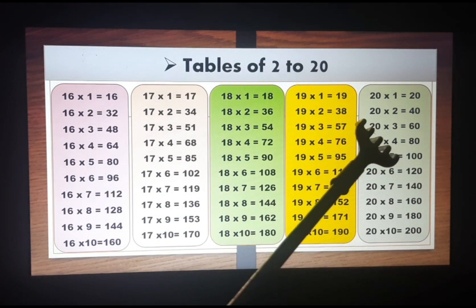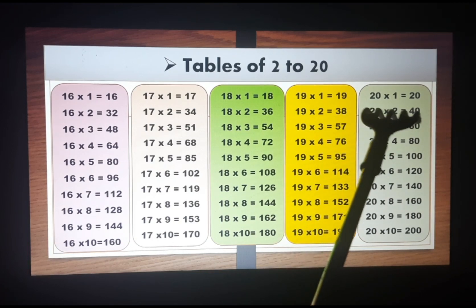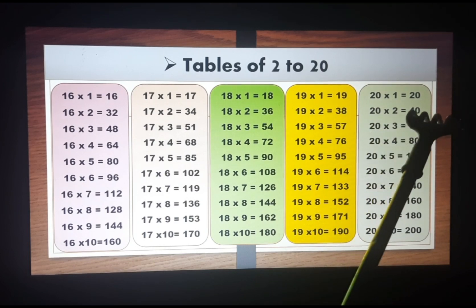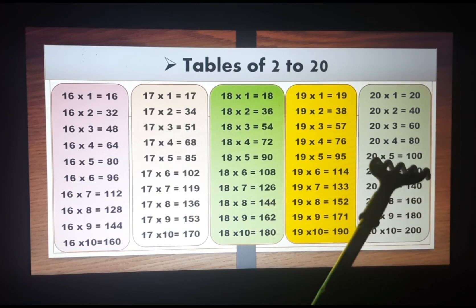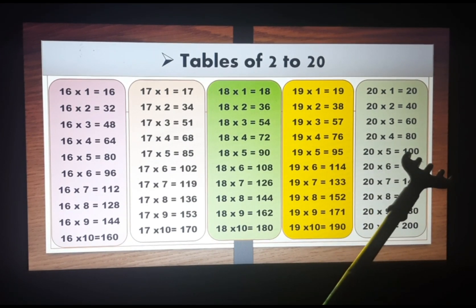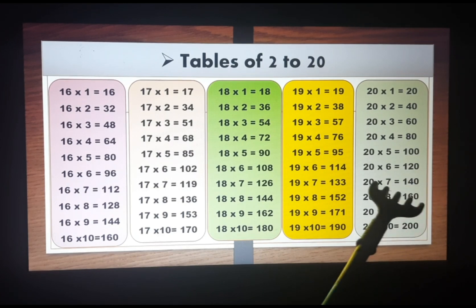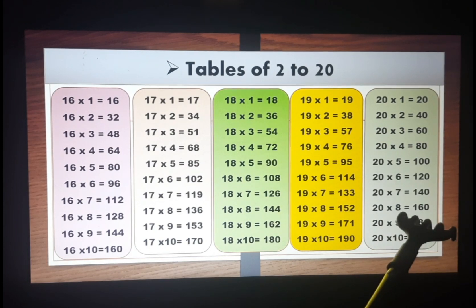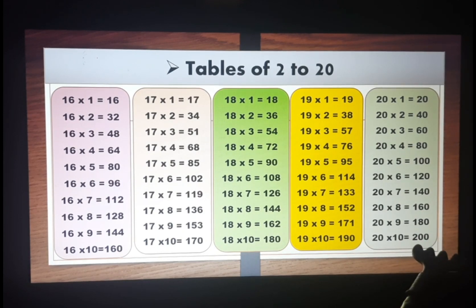Now we will go to the table of twenty. Start with me: twenty ones are twenty, twenty twos are forty, twenty threes are sixty, twenty fours are eighty, twenty fives are one hundred, twenty sixes are one hundred twenty, twenty sevens are one hundred forty, twenty eights are one hundred sixty, twenty nines are one hundred eighty, and twenty tens are two hundred.